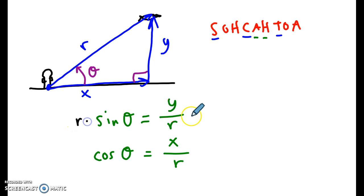If I multiply both sides by R, what do I get? Y equals R sine theta, where R is the hypotenuse.